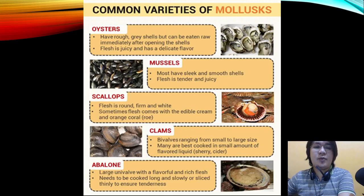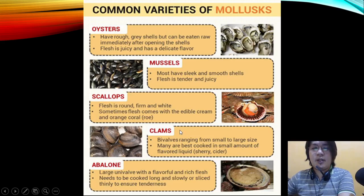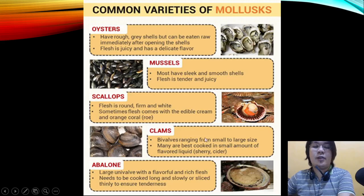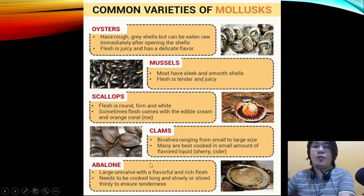Scallop flesh is round, firm, and white; sometimes it comes with an edible cream and orange coral, also called the roe. Clams are bivalves ranging from small to large size; many are best cooked in a small amount of flavored liquid such as sherry or cider. Abalone is a large univalve with a flavorful and rich flesh that needs to be cooked long and slowly or sliced thinly to ensure tenderness.